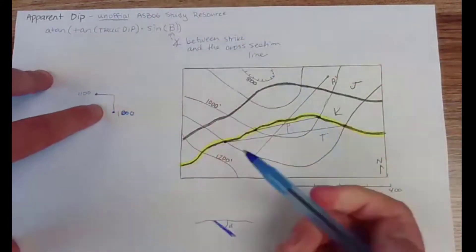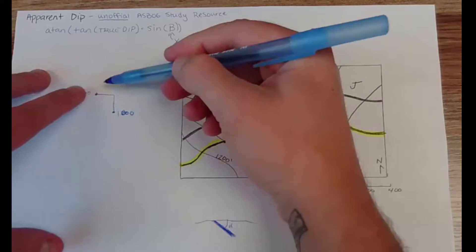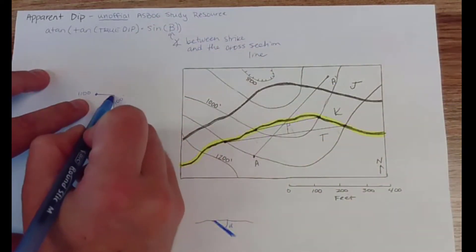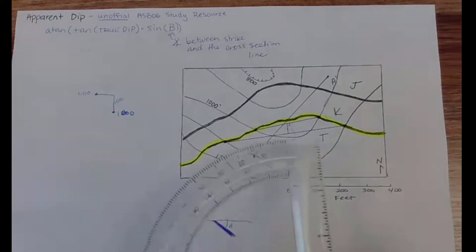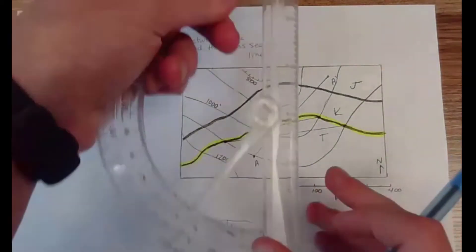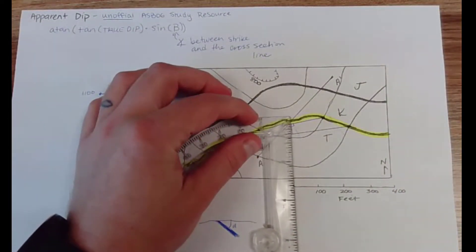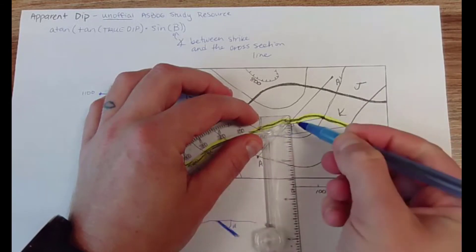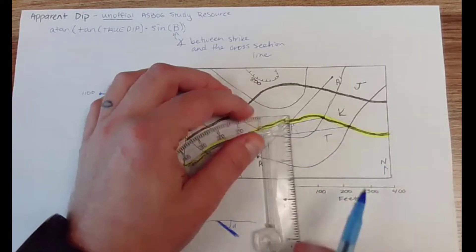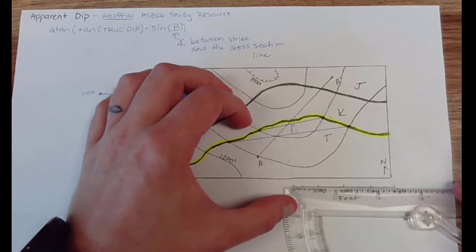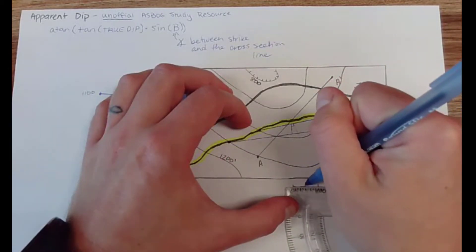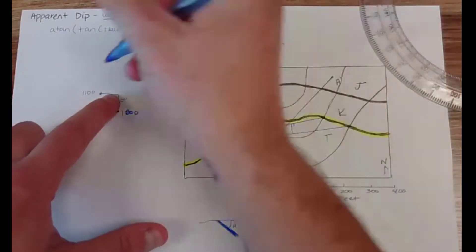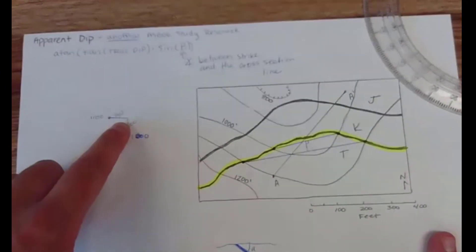So if you take either your ruler or just a scrap paper you can mark how far that is. So for me it goes out about a quarter of an inch and I'm going to come down here and measure what a quarter of an inch is. So for me a quarter of an inch is approximately 50 feet.